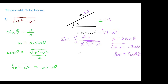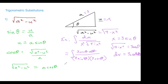Now we're ready to change our integral. It was going to be tough, but things get much easier. We have dx on top, which is 3 cos θ dθ. In the denominator we have x² which is 9 sin² θ, and √(9 - x²) which is 3 cos θ. The 3 cos θ terms cancel out.